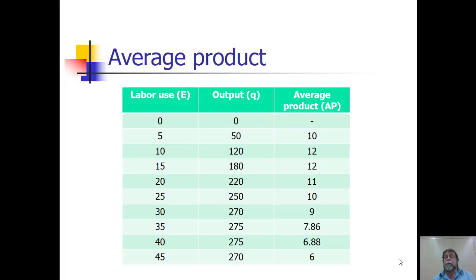Here, we've illustrated the average product in this table. And we can see that in each case, average product is just equal to total product or output, Q, divided by the amount of labor used. So, 50 over 5 is 10, 120 over 10 is 12, and so on. Now, notice what happens here. Initially, average product goes up, but then it starts to fall. And this decline is ultimately due to the law of diminishing returns that we've just talked about.